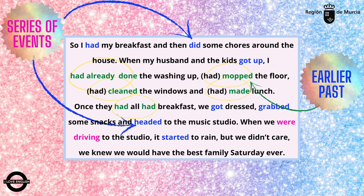So, I had my breakfast, then did some chores around the house. When my husband and the kids got up, I had already done the washing up, mopped the floor, cleaned the windows and made lunch. First I place you in the past — 'when my husband and the kids got up' — and now I tell you what had already happened before that, with the past perfect.